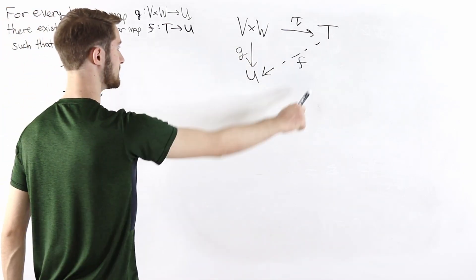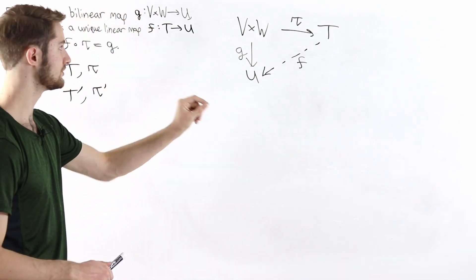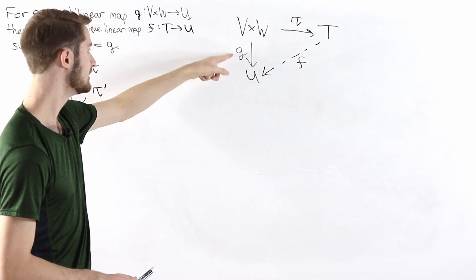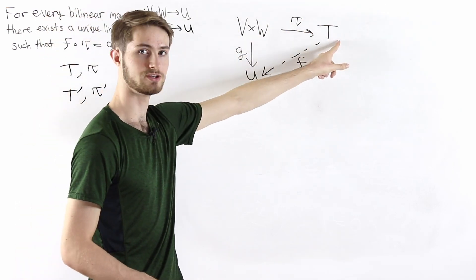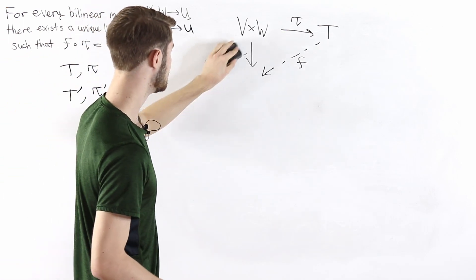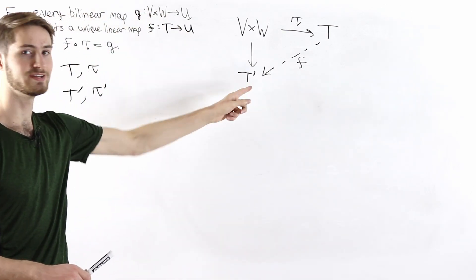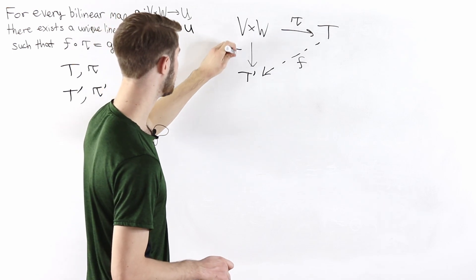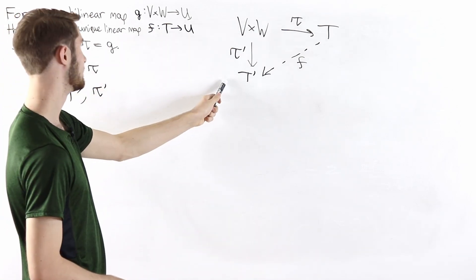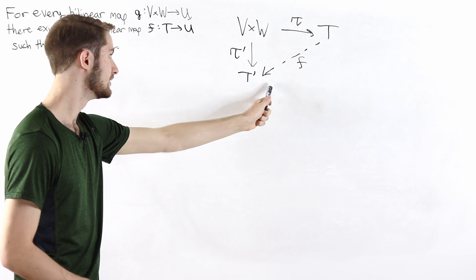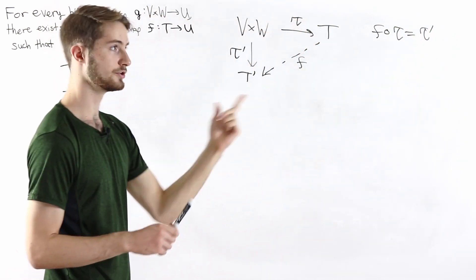To relate T and T prime, we choose g to be tau prime and U to be T prime in the universal property diagram. Since tau prime is a bilinear map from V cross W to T prime, the universal property gives us a unique linear map f from T to T prime such that f composed with tau equals tau prime. This is our first result.